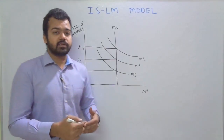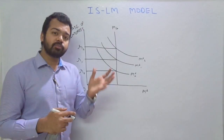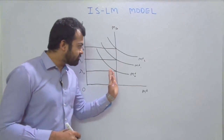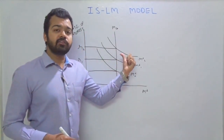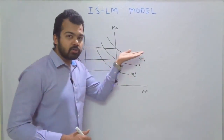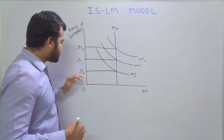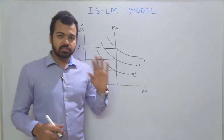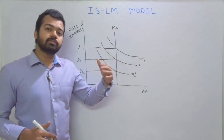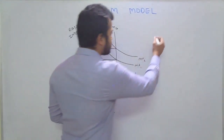As your income increases, your demand for money also increases. In Keynesian economics, this is known as liquidity preference. When your demand for money increases, the money demand curve shifts rightward or outward. Whenever money demand goes up with fixed money supply, in order to restore equilibrium in the money market, we need to increase the rate of interest. The rate of interest will offset the temporary disequilibrium created in the economy.